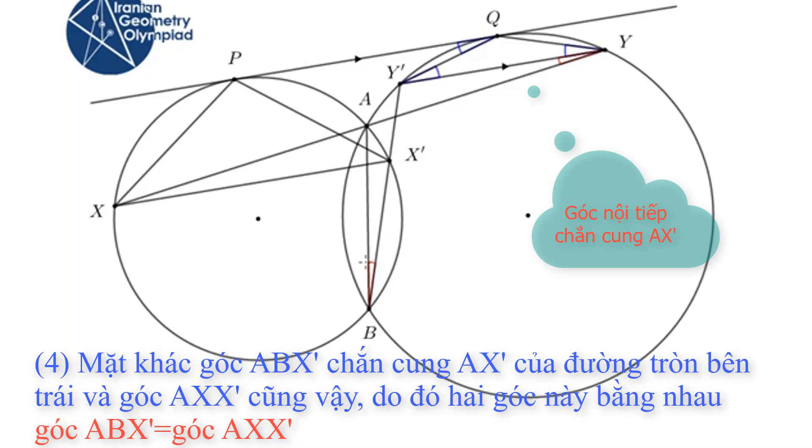On the other hand, this angle is half of the arc X prime A in this circle, and angle AXX prime is also half of the arc X prime A. So these two angles are equal too.